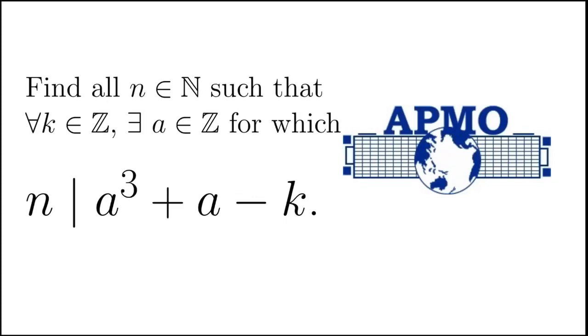Let's take a look at this problem, taken from the Asian Pacific Mathematical Olympiad 2014. It says, find all natural numbers n such that for all integers k, there exists an integer a for which n divides a³ + a - k.